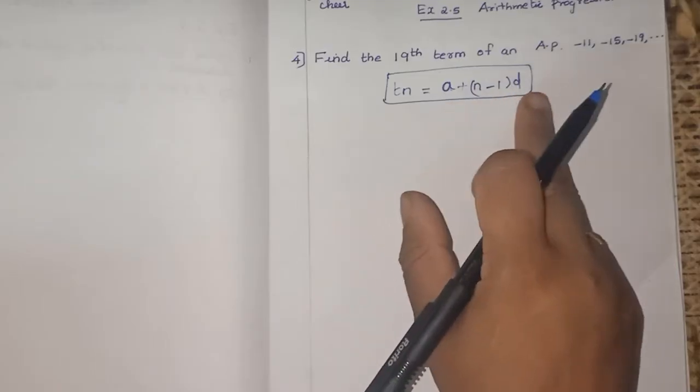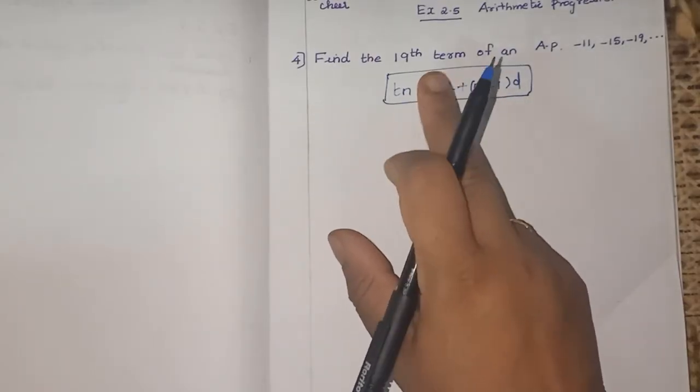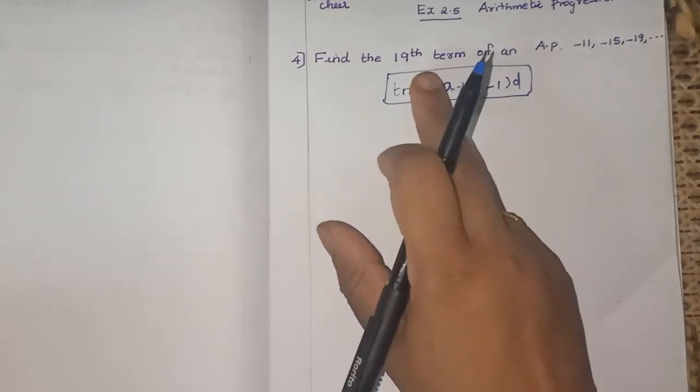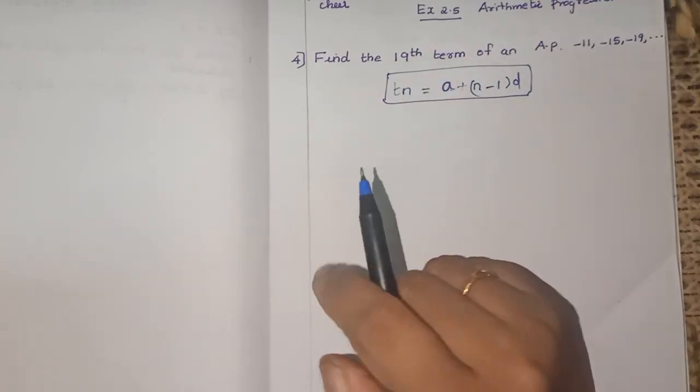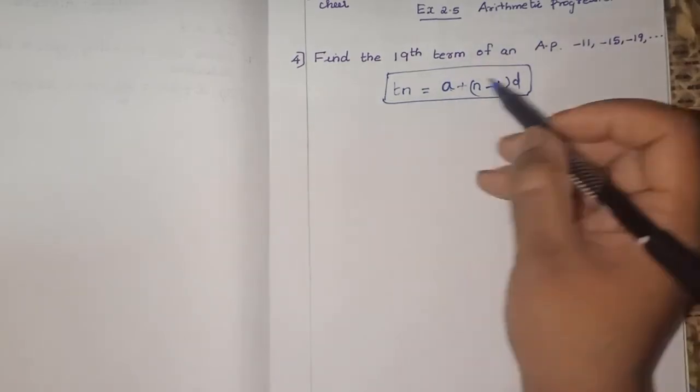So when A and D is known, we can find any term whichever asked in the question. Now 19th term is asked. What we need? A we need and D we need.